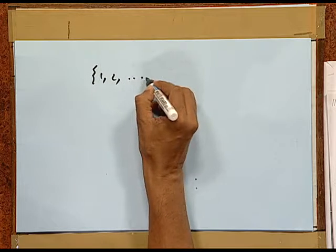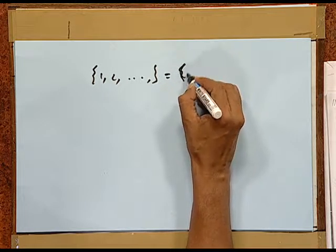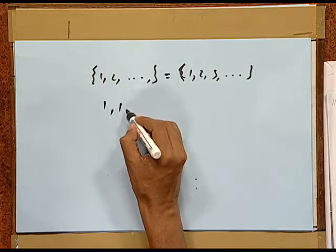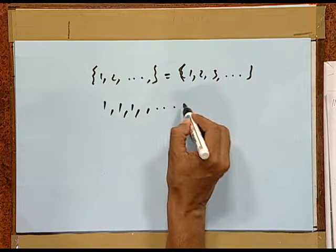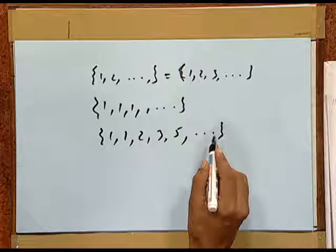Now we must distinguish between a set and a sequence. The set of natural numbers and the sequence 1, 2, 3, and so on are not exactly the same, because in a set the elements will not repeat, whereas we can have a sequence in which all the elements are the same. In a sequence the elements need not be distinct, whereas in a set the elements must be distinct and may not have an order, whereas in a sequence the elements have a specific order.